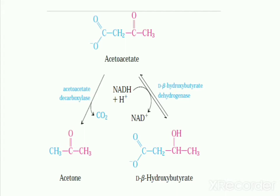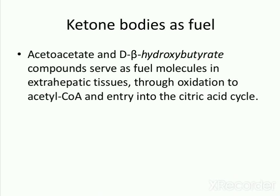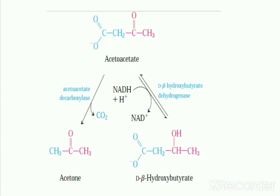The final step shows that d-beta-hydroxybutyrate dehydrogenase, a mitochondrial enzyme, reversibly produces d-beta-hydroxybutyrate. Acetoacetate is also converted to acetone by acetoacetate decarboxylase, which removes carbon dioxide. In healthy individuals, acetone is formed in very small amounts from acetoacetate by this decarboxylation reaction.